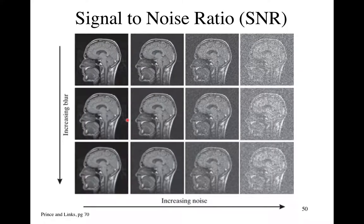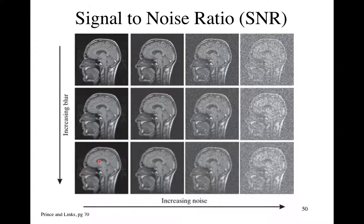The signal-to-noise ratio is usually computed by taking a mean value in an area and sampling some place to figure out what the noise is, then calculating a ratio. Looking at the previous slide's set, the signal-to-noise ratio is going down significantly here because the mean value of the brain divided by the amount of noise will be a smaller number. If we blur the image — say using a convolution filter or averaging four pixels together and moving across — we will increase SNR but reduce spatial resolution.